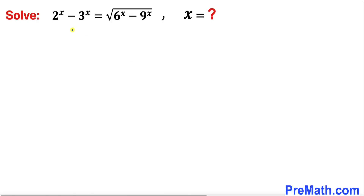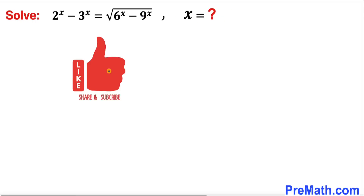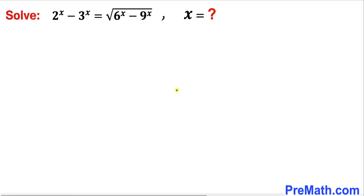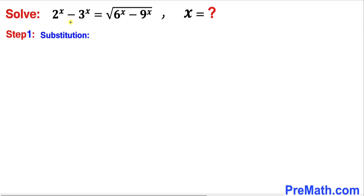In this video we are going to solve the equation 2^x minus 3^x equals the square root of 6^x minus 9^x. Let's go ahead and get started with the solution.